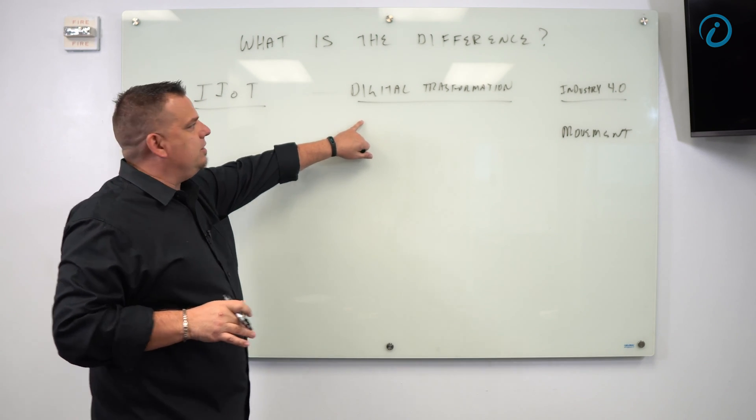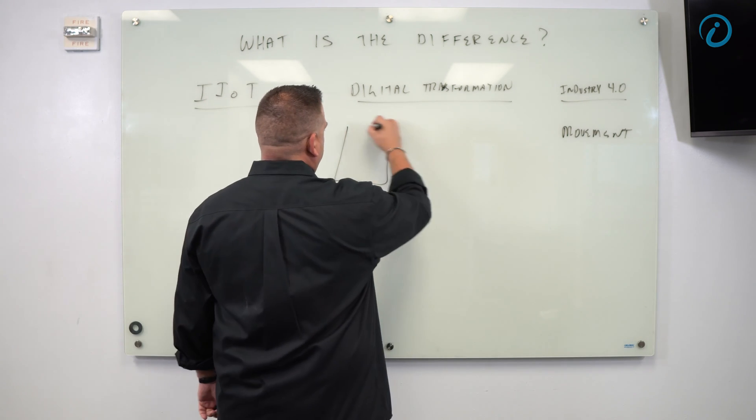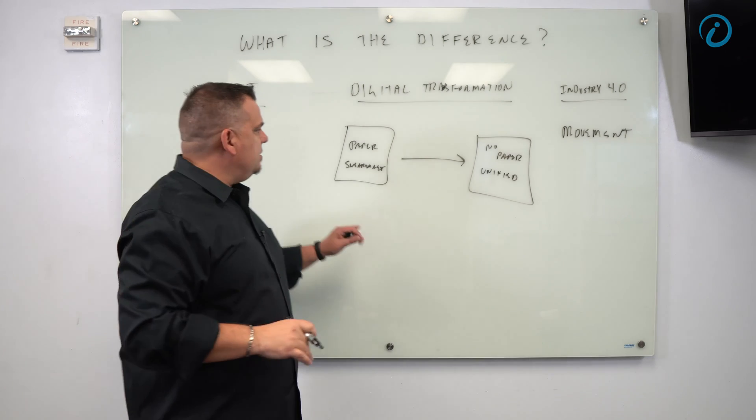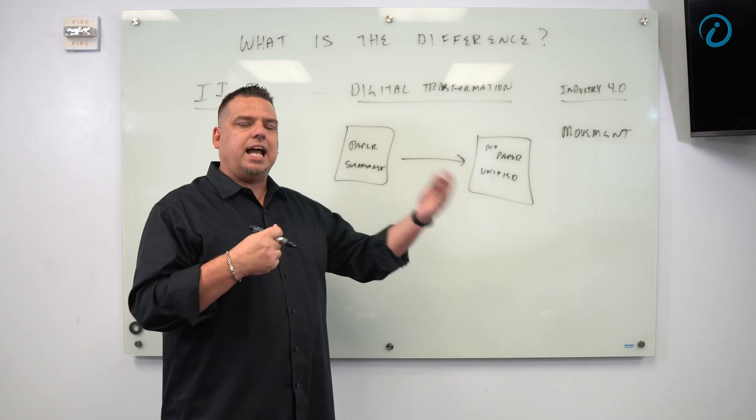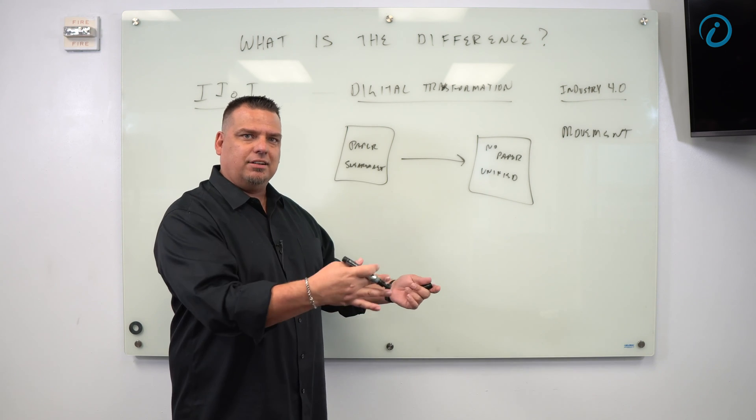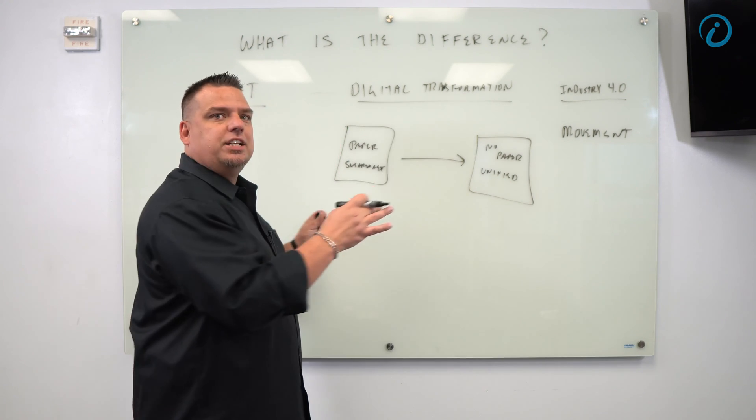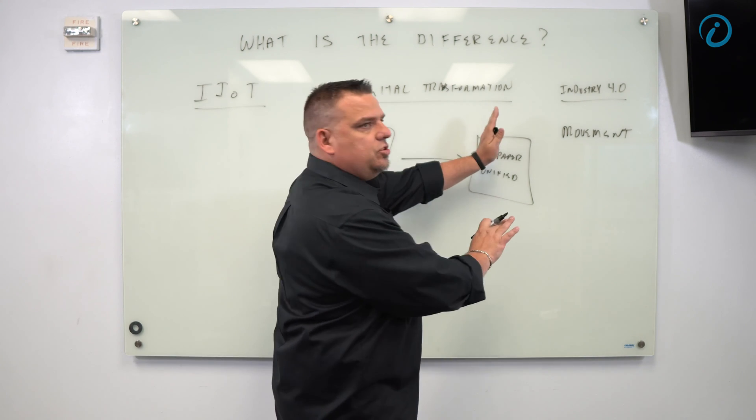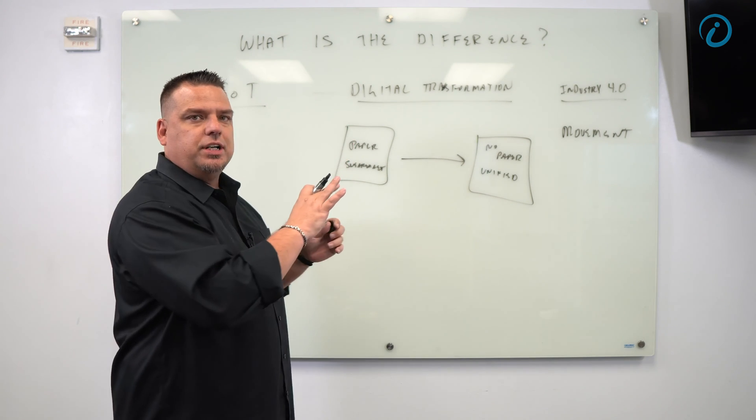Digital transformation is simple. It is the digitization of your business from paper and sneaker net to no paper and unified. All the places in your plant where you're printing out reports a day later, where you are sending out interns with clipboards collecting data every 15 minutes - all of that stuff becomes digital and unified in real time. Digital transformation is taking all the paper, the data silos, and turning it into a digital front end that is completely unified in real time.